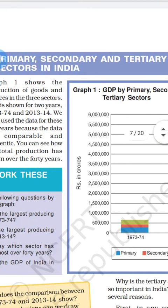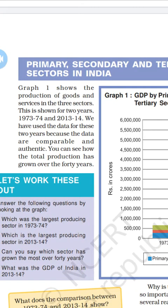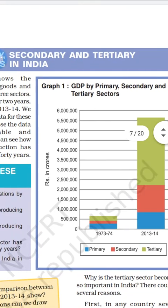Job opportunities also grew more in recent years. The government has provided data on these three main economic activity sectors for the development of the Indian economy. This data is authentic and comparable, and you can see how total production has grown over the 40 years.